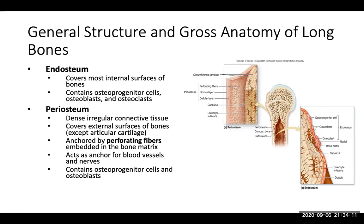The periosteum is the dense irregular connective tissue covering the external surface of bones, except where there is articular cartilage. It is anchored to the bone by perforating fibers embedded in the bone matrix. The periosteum acts as an anchor for blood vessels and nerves, and it contains osteoprogenitor cells and osteoblasts, which build bone. Some of these cells are also found within the endosteum.